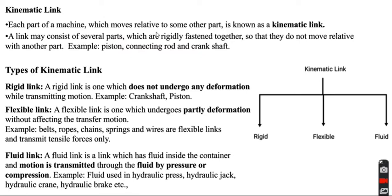If the piston is moving, the connecting rod is also moving. That's why it moves relative to some other part. A link may consist of several parts which are rigidly fastened together so that they do not move relative to another part. Examples include piston, connecting rod, and crankshaft.